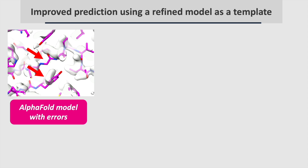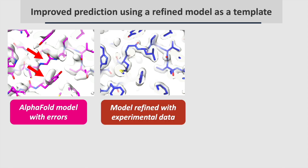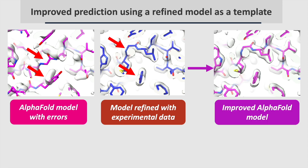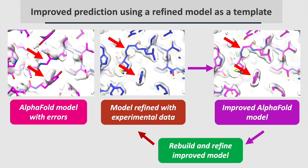An exciting aspect of AlphaFold prediction is that it can be improved by using accurate models as templates. Here is part of an AlphaFold model that does not match an experimental density map. A rebuilt and refined model is much better. Using this refined model as a template in prediction yields an improved AlphaFold model. The new prediction can be used in additional cycles to improve both the model and the map.